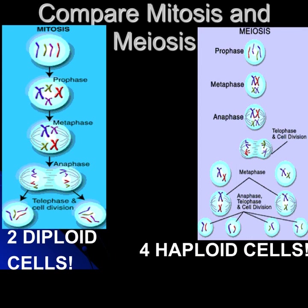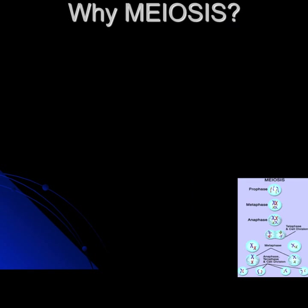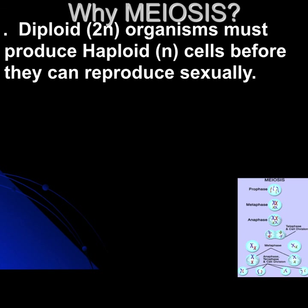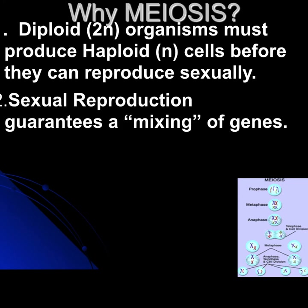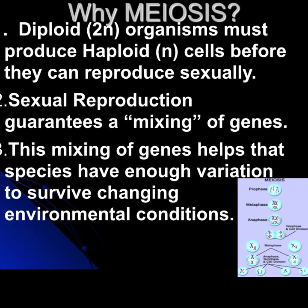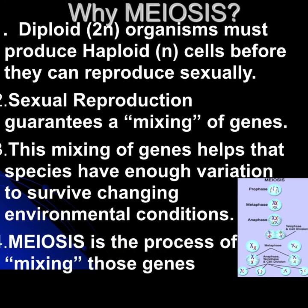Why meiosis? Diploid 2N organisms, like ourselves, must produce haploid cells before they can reproduce sexually. Sexual reproduction guarantees the random mixing of genes in the next generation. This mixing of genes helps give variation to survive changing environmental conditions. Meiosis is the process of mixing these genes in random manners to produce new offspring.